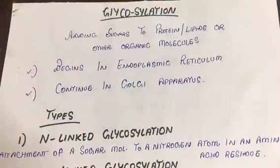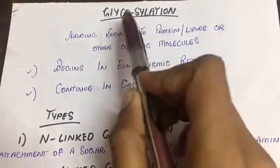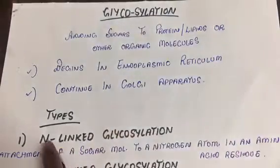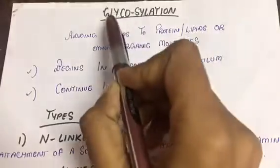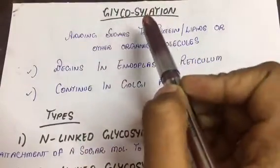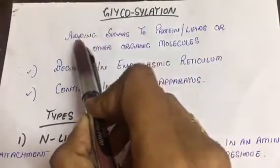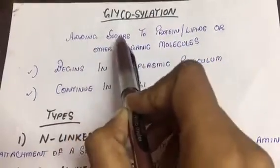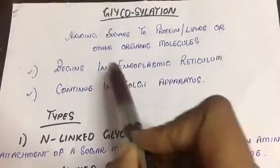Hello everyone, welcome to another tutorial from Biology with Shalini. In this video we are going to talk about glycosylation, particularly about N-linked glycosylation. Glyco means sugar, so by glycosylation we understand that it is the addition of sugar or adding sugars to protein, lipid, or other organic molecules. It begins in endoplasmic reticulum.